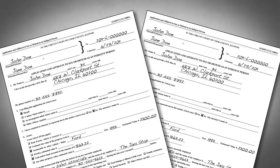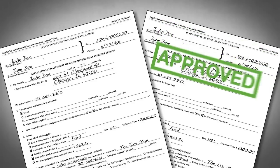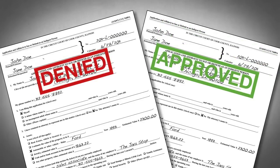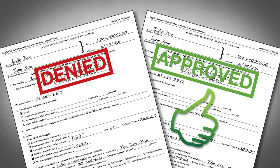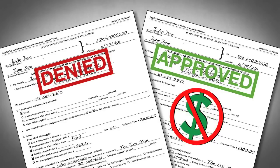Once you give your form to the court, a judge will review it and either approve or deny your request. How soon your request is approved or denied depends upon the court. If your request is approved, you will receive an order from the judge saying that you do not have to pay your court fees.